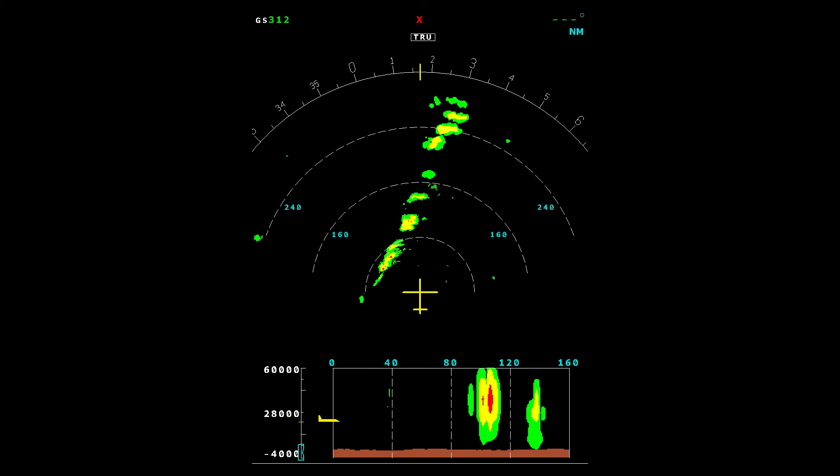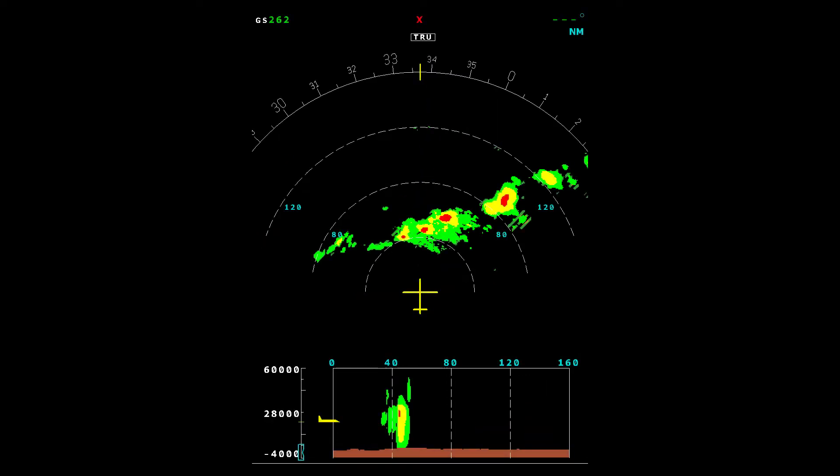Sometimes, just using the auto mode alone, you can see that a deviation path will be required as well as the path. Other times, determining the path to take is much more difficult.